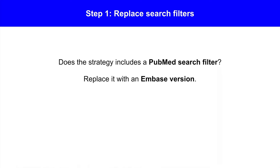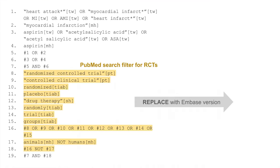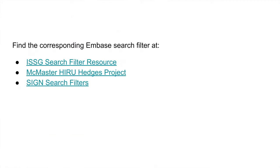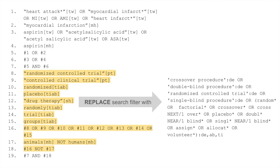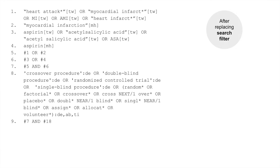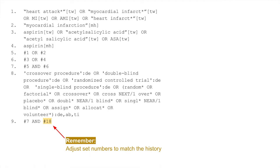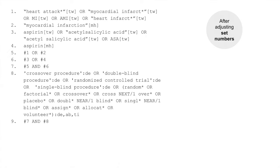Step 1: Replace search filters. If the strategy includes a PubMed search filter, replace it with an Embase version. In our case, we have a PubMed search filter for randomized controlled trials. We need to replace these statements with the Embase search filter for randomized trials. To find the corresponding Embase search filter, refer to organizations like these. This is the Embase search filter for randomized controlled trials that I found. Let's replace the PubMed search filter with this Embase version. Here's our strategy after replacing the search filter. Remember to adjust set numbers so that search combinations match the history accurately. Here's our strategy after adjusting the incorrect set number.